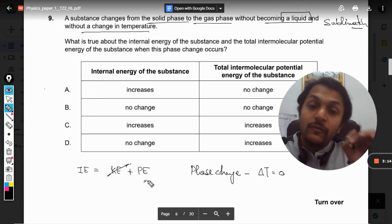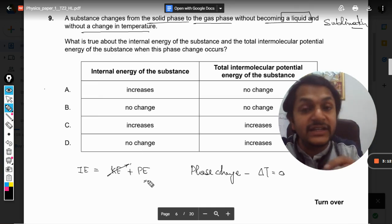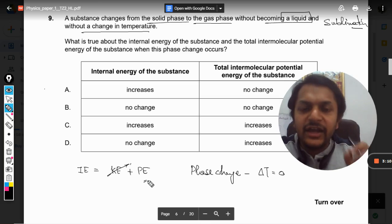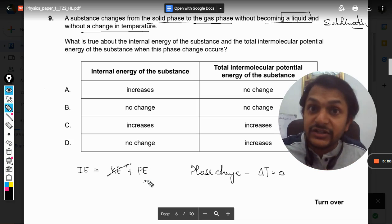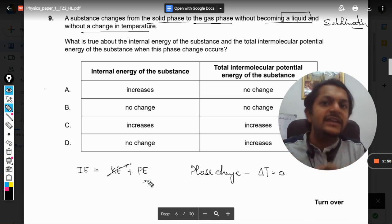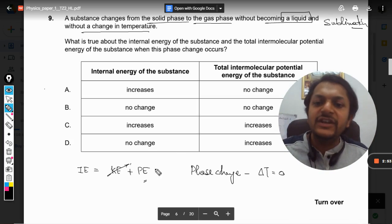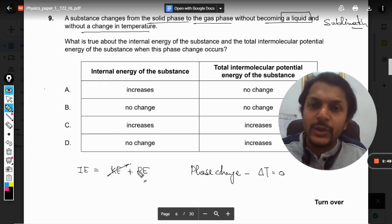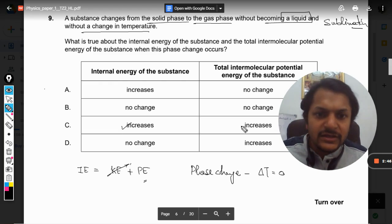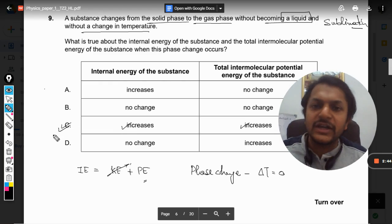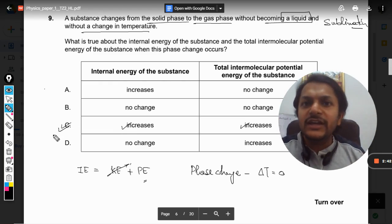One thing is sure - when you were heating the substance, the heat energy was absorbed by the material, so it has to show up as something. Either as kinetic energy or potential energy. We are saying that kinetic energy does not change, so definitely the potential energy has increased, and obviously the internal energy has also increased. So our answer will be C in this particular case of phase change.